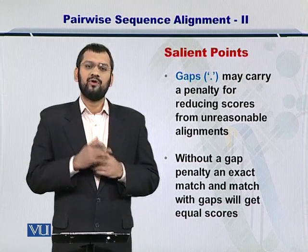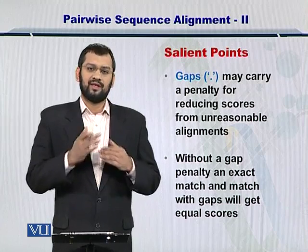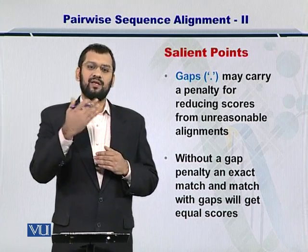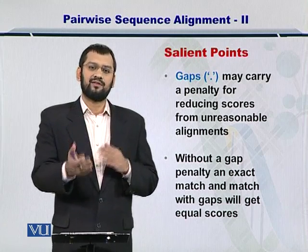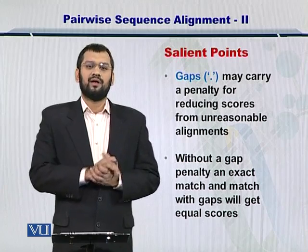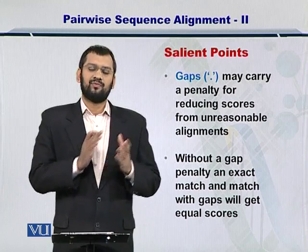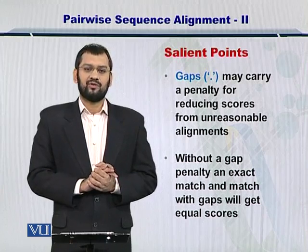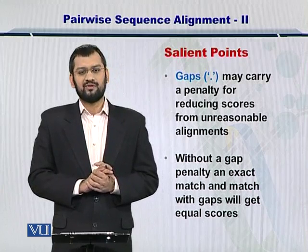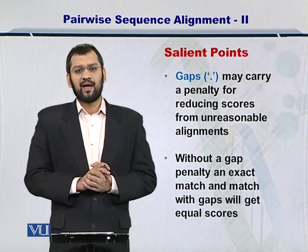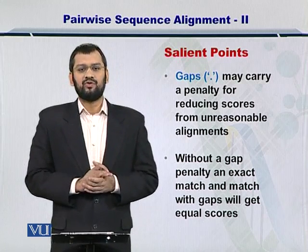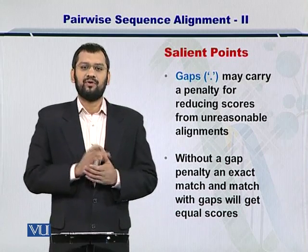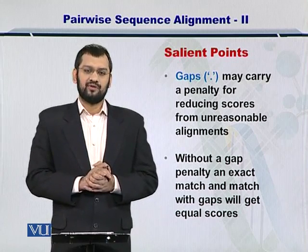If we do not give a negative score, then an exact match will obtain a score equal to an alignment where you have only one gap in the comparison of the two sequences. Therefore, gaps need to be given a negative score whenever you are aligning two sequences.